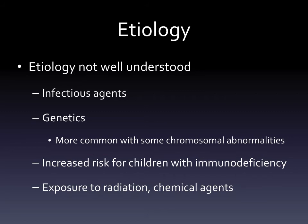The etiology of leukemia is not well understood. Theories include infectious agents making the body more vulnerable, genetic factors - it's more common with chromosomal abnormalities - immunodeficiency, and exposure to toxins like chemical agents or radiation. However, many children develop leukemia without any of these known factors, so these are associations rather than direct causes.